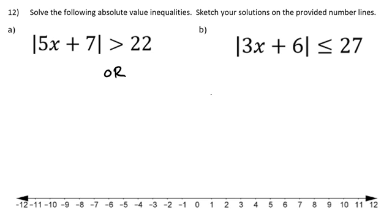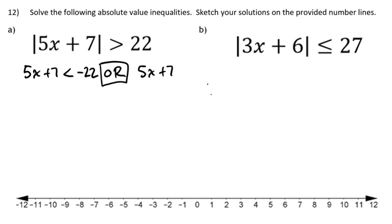I set up two inequalities. On the left side, I keep the inside part 5x plus 7, flip the direction of the inequality, and take the opposite of 22 — giving 5x plus 7 less than negative 22. On the right side, everything stays the same: 5x plus 7 is greater than 22. This is the 'keep-flip-opposite' method to eliminate the absolute value.